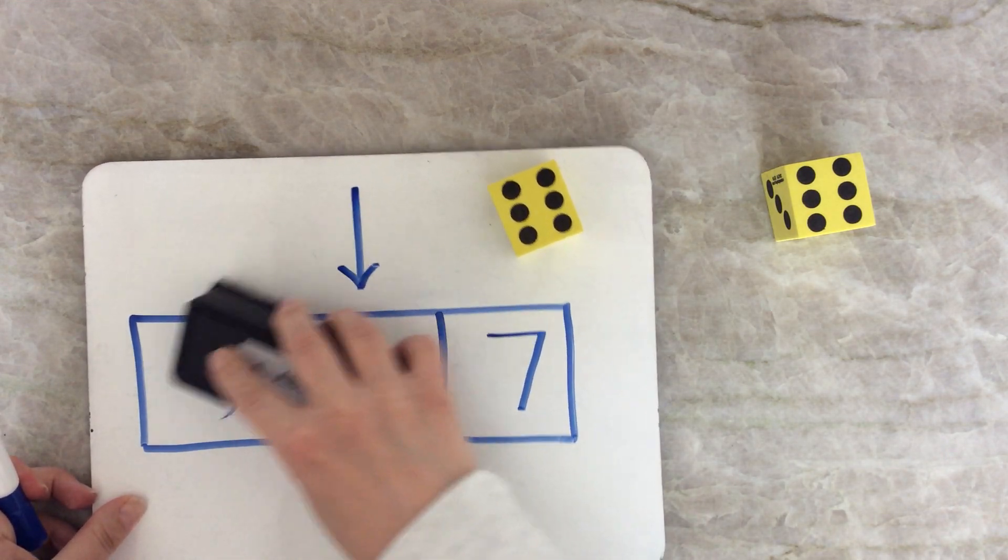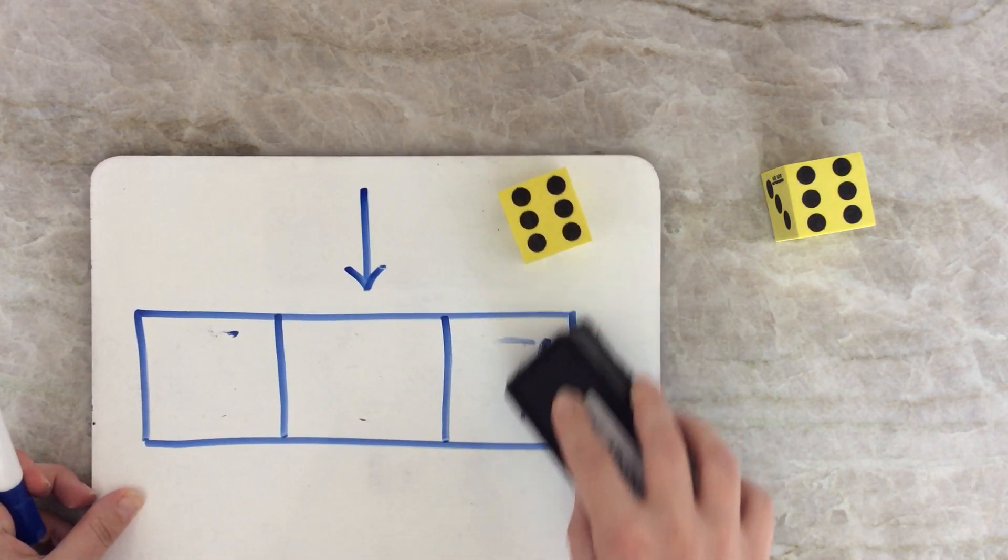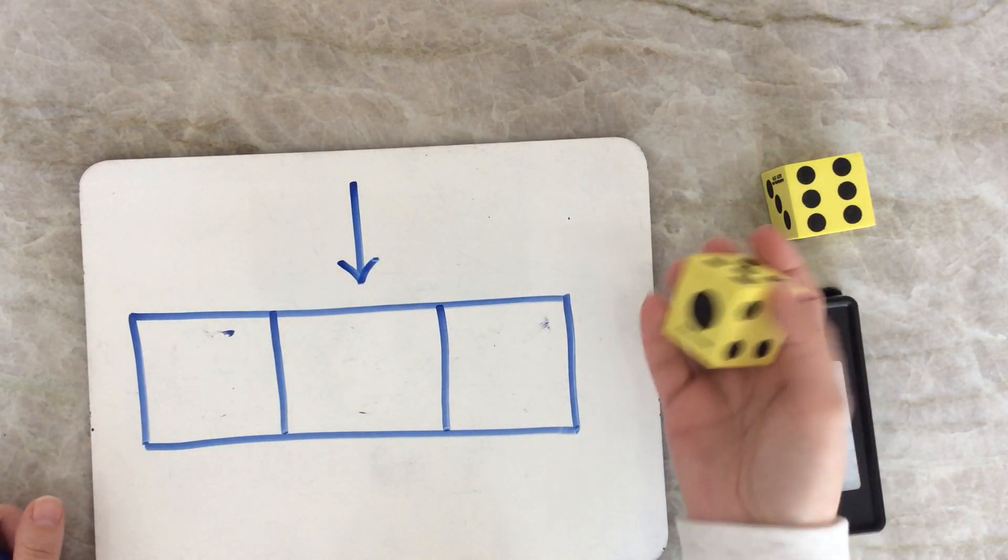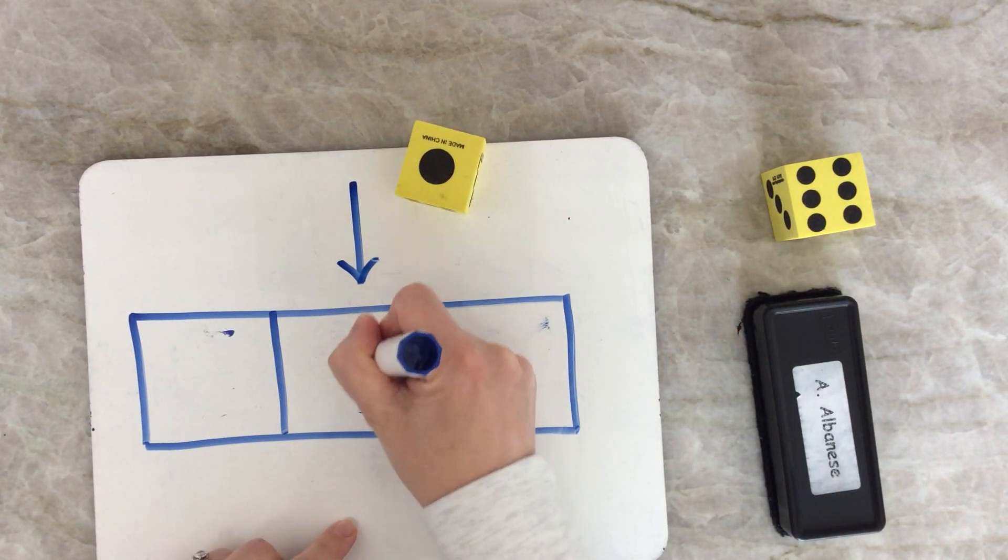I'm going to erase the boxes, the numbers inside. And if you're using a piece of paper, you can always erase it or just make more boxes. So here I go. Oh, I got the number one. Write it in the middle.